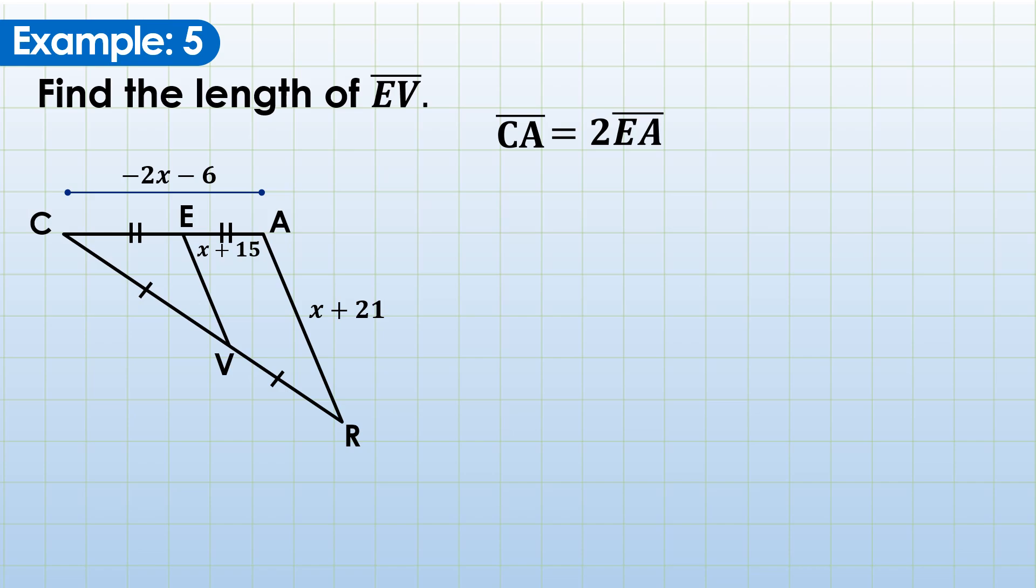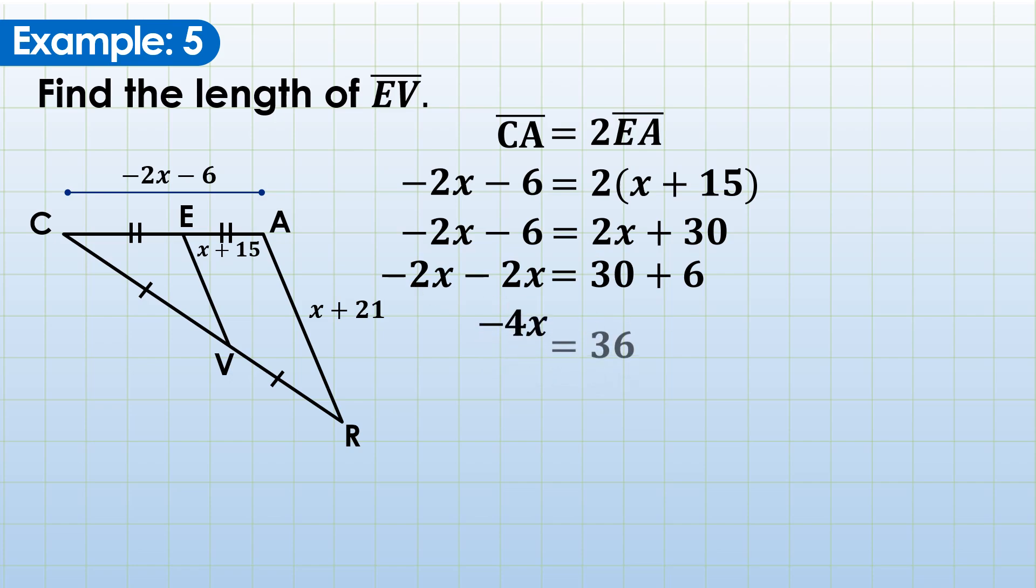Next is substitution. CA is negative 2x minus 6, and we're just going to double x plus 15, parentheses. And then distribute by using distributive property. That becomes 2x plus 30. And then this is a linear equation. Let's add 2x on both sides of the equation and negative 6, or simply transpose 2x to the other side, to left side, and negative 6 to the right side. So that becomes negative 2x minus 2x equals 30 plus 6. And then combine like terms, negative 2x minus 2x, negative 4x. Right side of the equation is 36. Divide both sides by the numerical coefficient, negative 4. x is a negative number, negative 9.